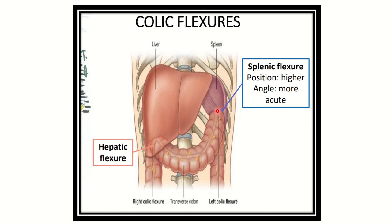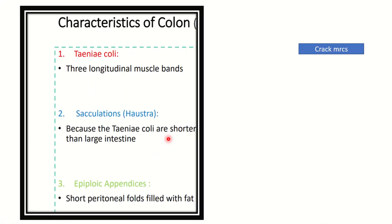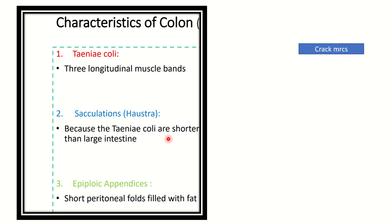These two flexures are very important because during hemicolectomy, on the left side there may be a tear or injury to the spleen. On the right side it is rare, but sometimes liver injury may also occur.